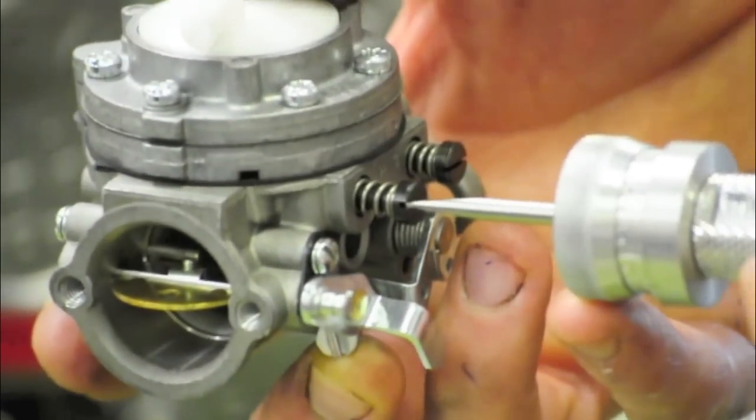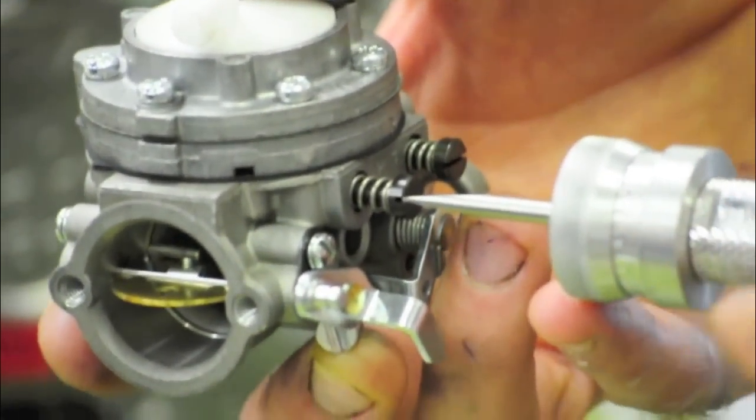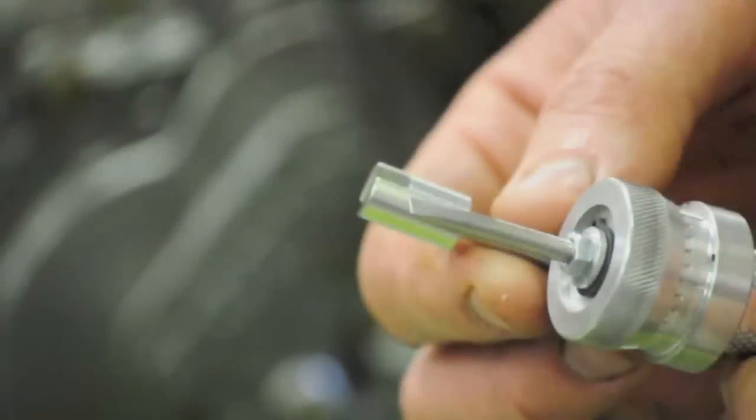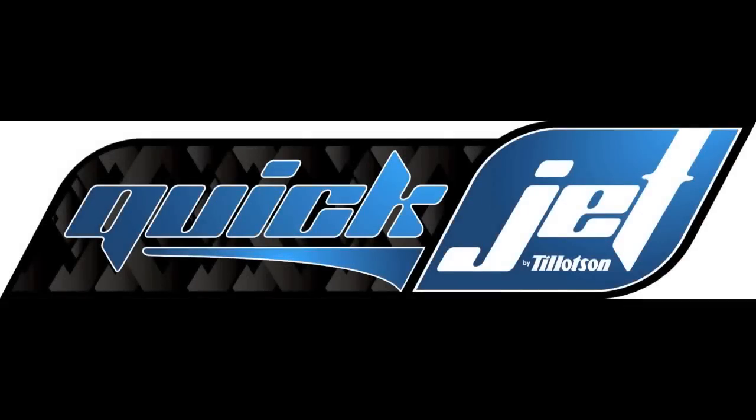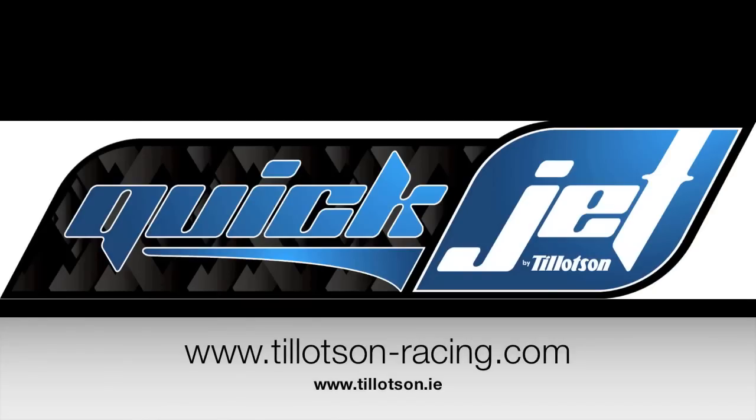Now you can use the quickjet to adjust needles on any carburetor with a standard slotted needle. Additional heads can also be purchased to fit other carburetors. You can purchase a quickjet from your local Tillotson dealer or at Tillotson-Racing.com. Thanks for watching.